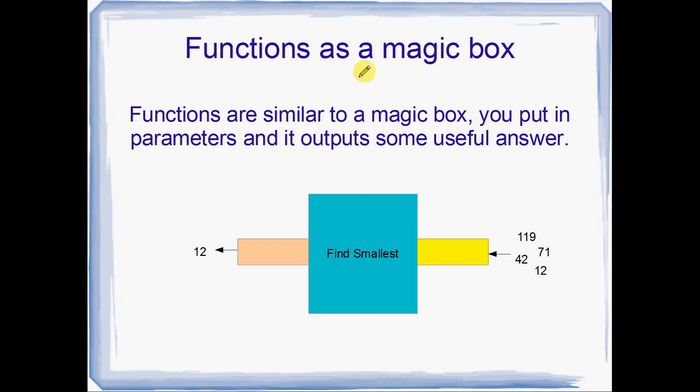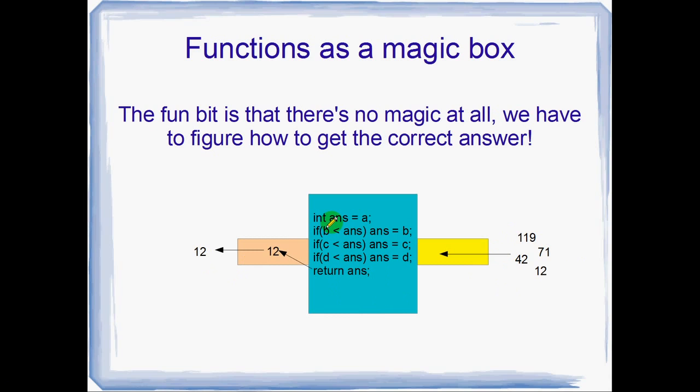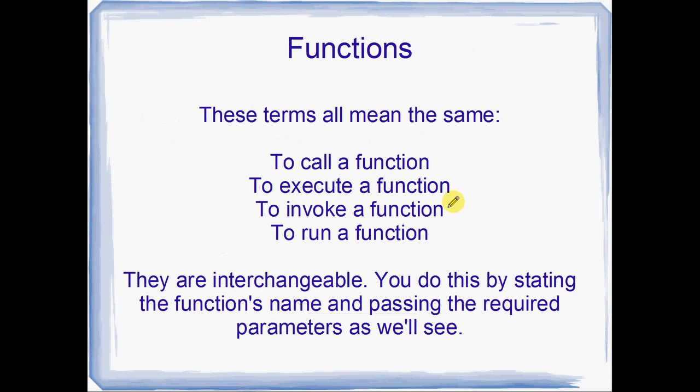Basically a function or a procedure is just a magic box, and it takes some input, which I've drawn over here on the right: 119, 71, 42 and 12. And my function just here is find smallest and it returns the smallest of those four integers. The magic box just here does something like this. This might be the code to the magic box. It magically figures out which one of these four is the smallest and it gives you the answer.